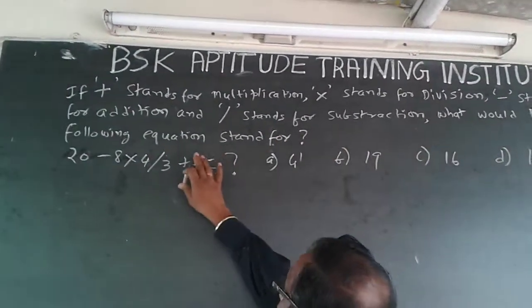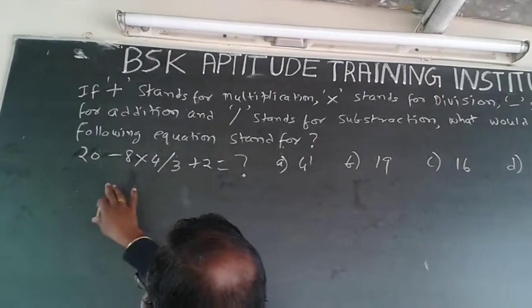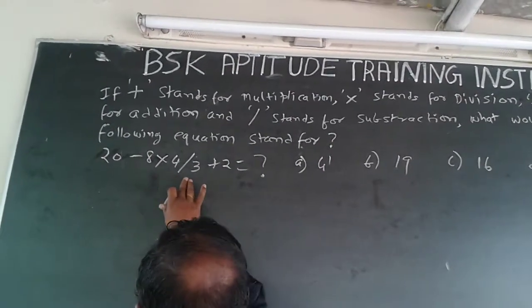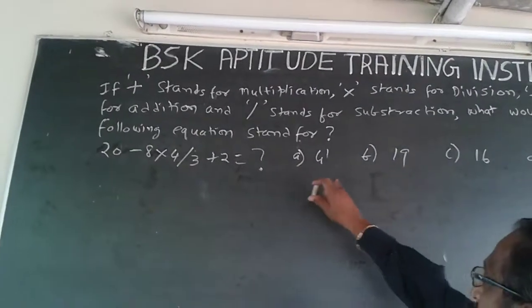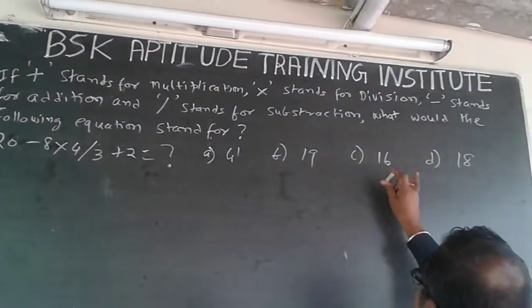what would be the following equation stand for? 20 minus 8 into 4 divided by 3 plus 2 will be equal to what? Options are 41, 19, 16, and 18.